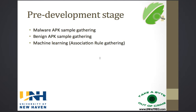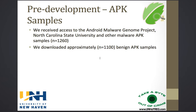Before development, we had to gather APK samples — both malicious and benign — and perform machine learning to distinguish good applications from bad ones. We received access to the Android Malware Genome Project from North Carolina State University and other malware APK samples, using approximately 1,260 malicious samples. We also downloaded approximately 1,100 benign APK samples.